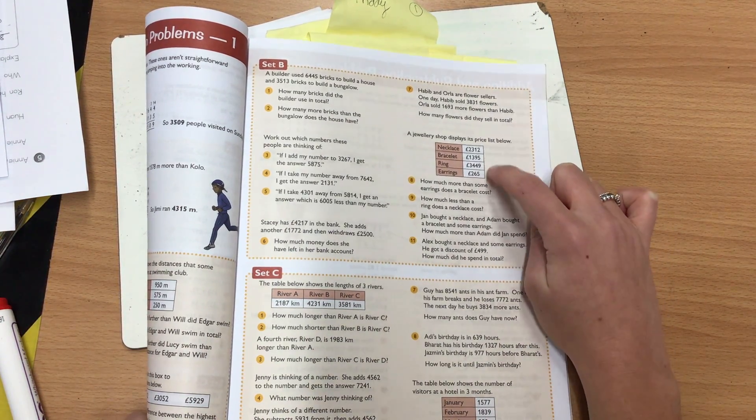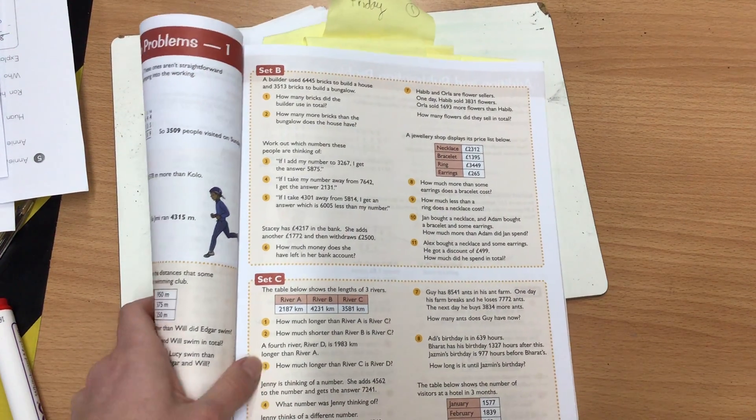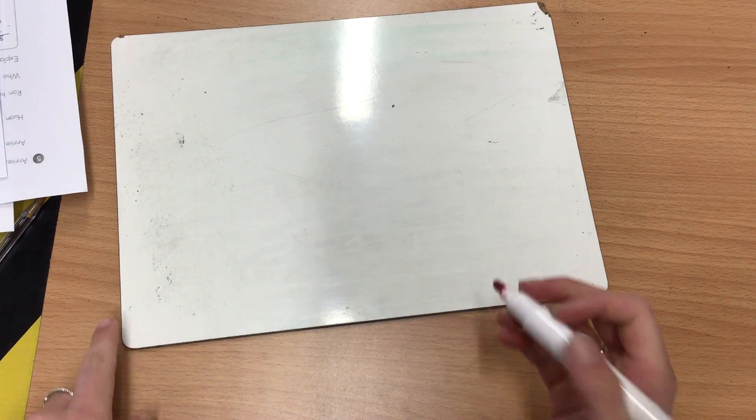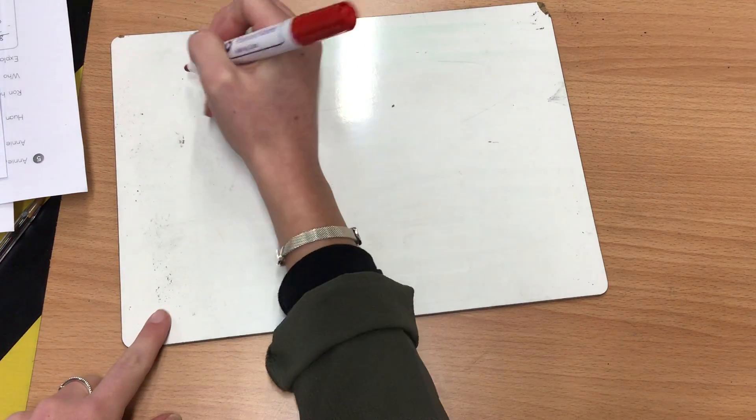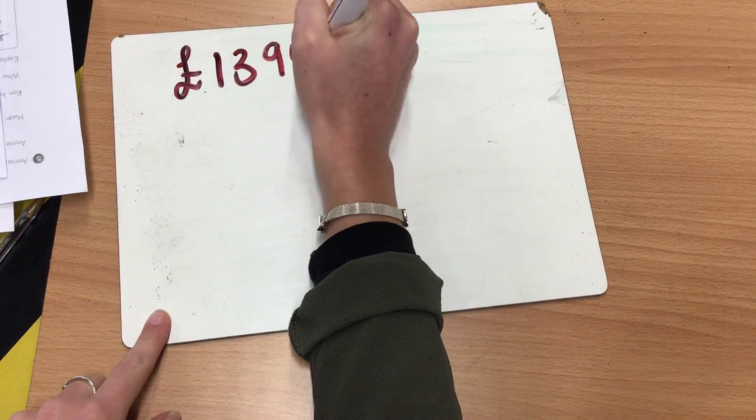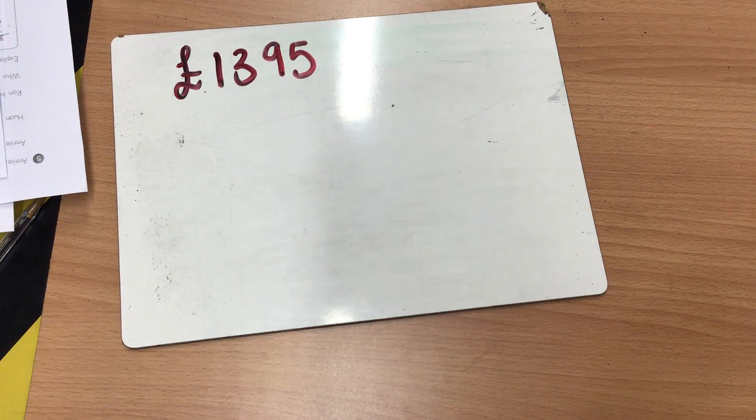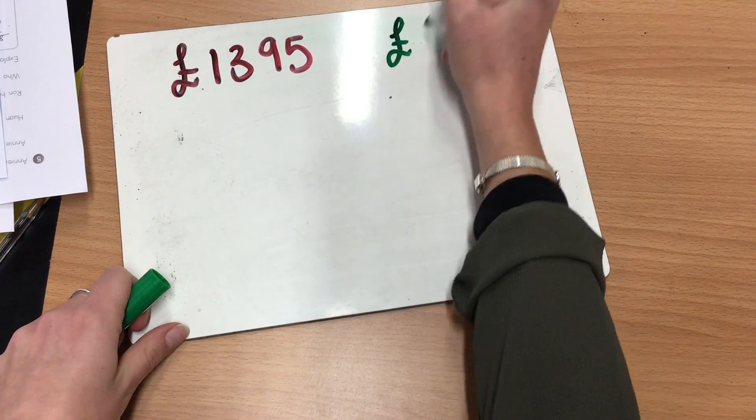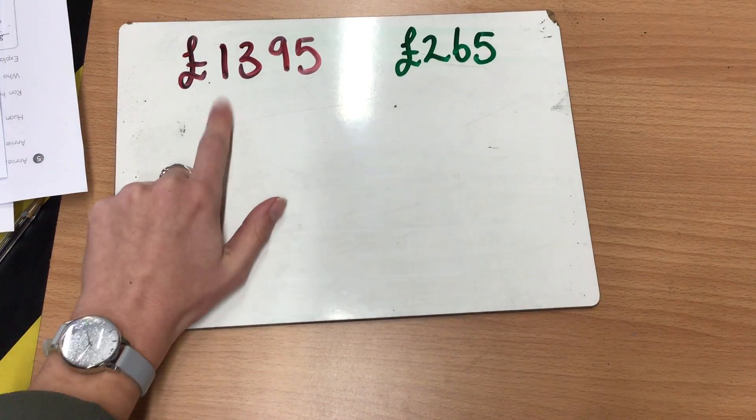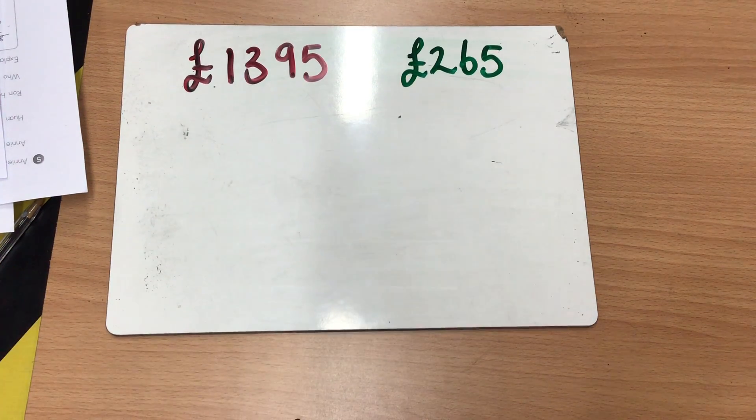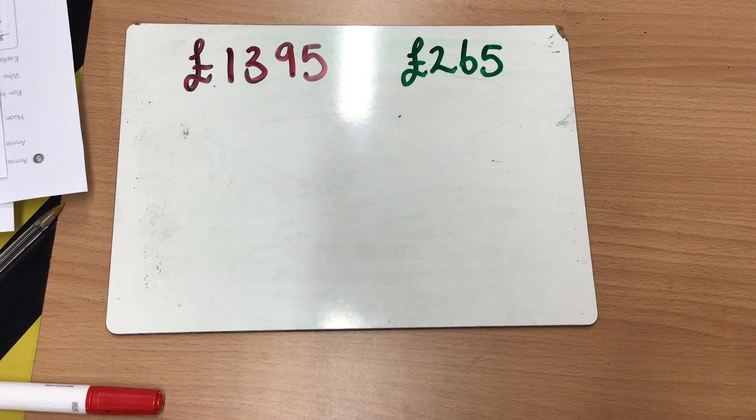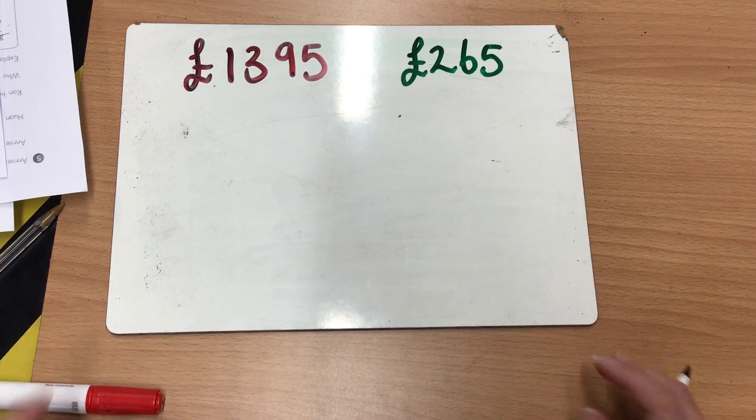Actually the bracelet is more expensive than the earrings. So we're going to look at the difference in that price. So again, I'm just going to write something out to help me. So I know that the bracelet costs £1,395. And I know that the earrings cost £265. So I want to know how much more expensive is this necklace than the earrings. So exactly what we've done before. We could count on to find the difference, but I'm going to use my column subtraction method again to help me solve this.